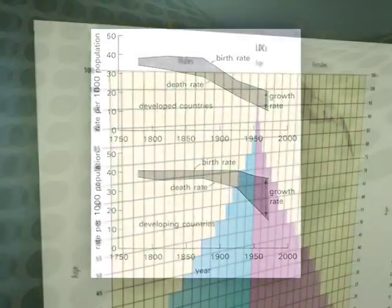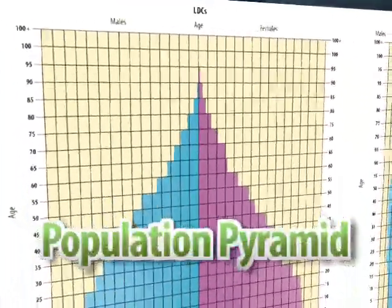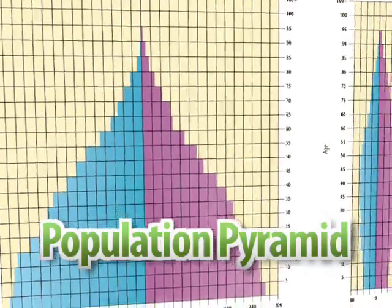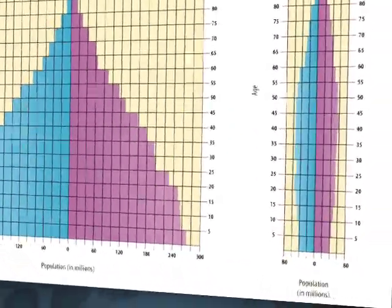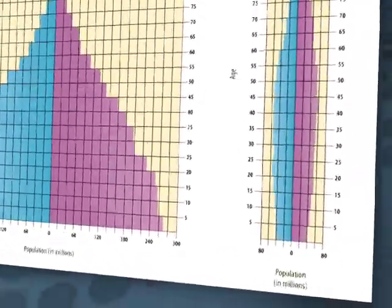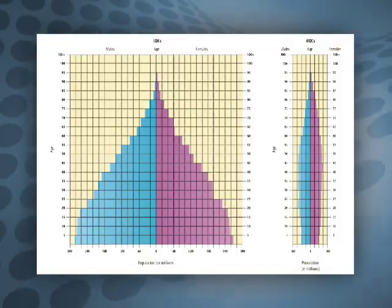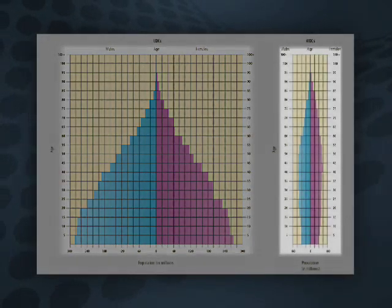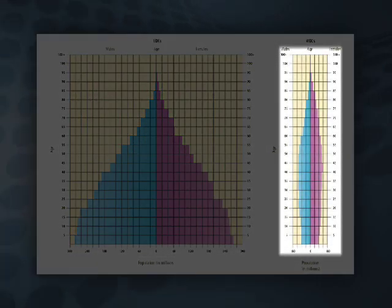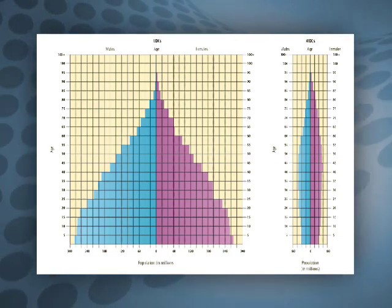A population pyramid, or an age structure diagram, is a chart that describes population by age and gender. These diagrams usually describe the population of a nation. However, this one combines all less developed countries on the left and the more developed countries on the right. Please note the different structure of the diagrams.